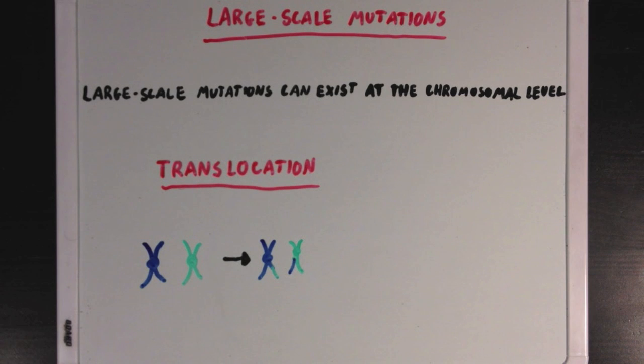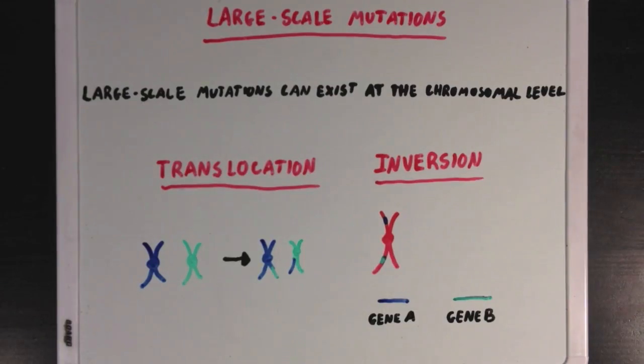The next large-scale mutation we'll talk about is chromosomal inversion, and that's when two genes on the same chromosome switch places. So here, our green and blue genes are being swapped and end up on different parts of the chromosome after the mutation.